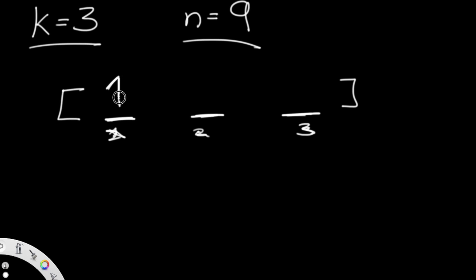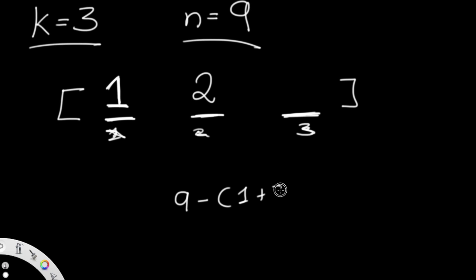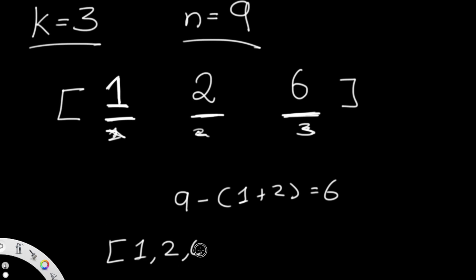We'll start off by putting the first slot as a value of one. What are some possibilities for the second value? It could be two, three, four, five, six, seven, eight, or nine. Let's choose two. So we have one and two. What does the third number have to be to satisfy n equals nine? That's nine minus one plus two, which is nine minus three, which equals six. So we put six as our third value. This is one of our combinations: one, two, six, and we add this to our results.